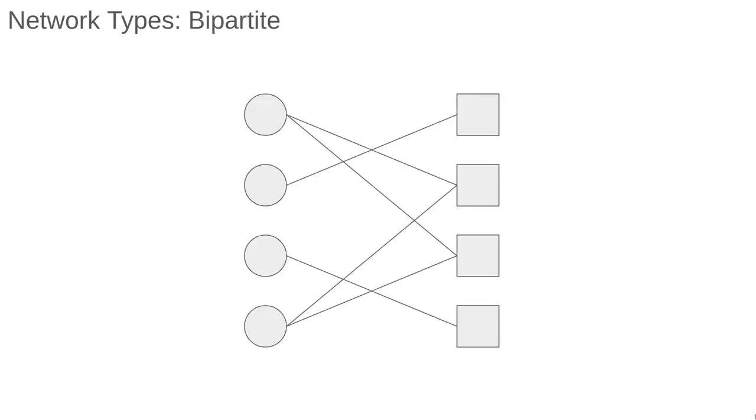Finally, let's introduce a special type of network that arises when nodes can be separated into two classes, where there are no connections between nodes in the same class, and only connections between classes. This is called a bipartite network. These arise frequently in practice. For example, if we have a number of people and a number of events, the people are one class and the events are another. We connect a person with an event if they have attended that event.